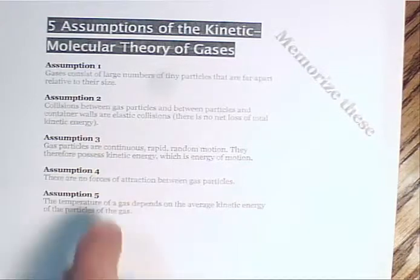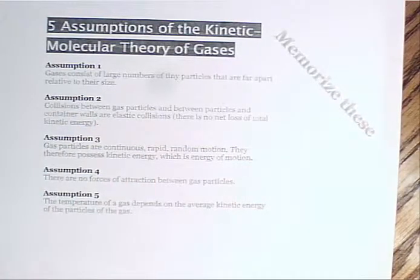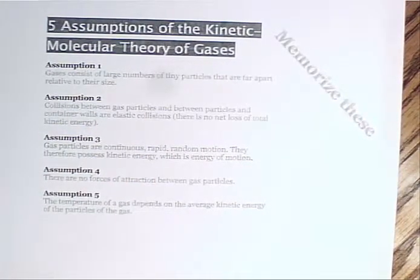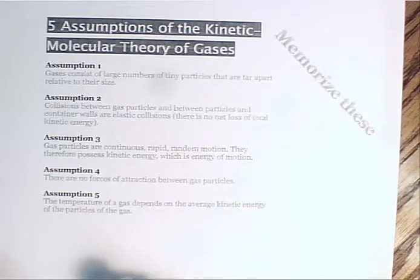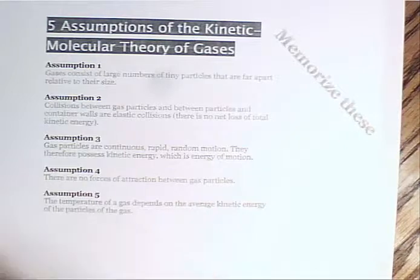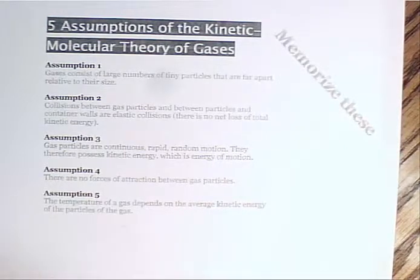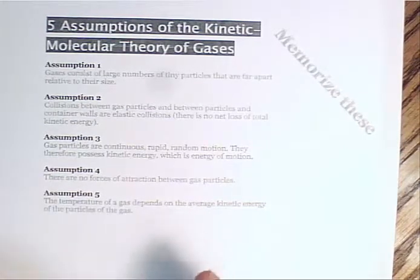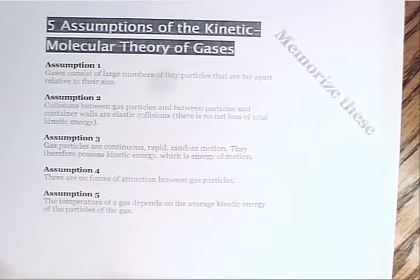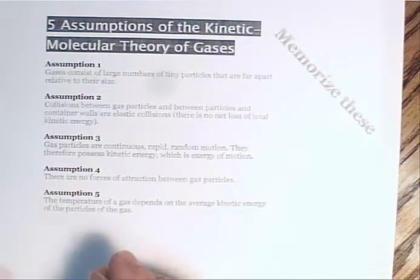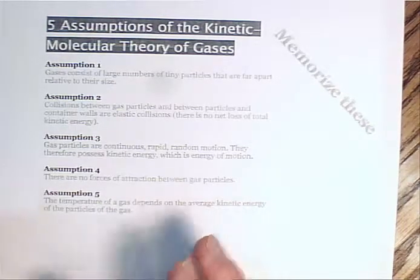So gases consist of large numbers of tiny particles far apart relative to their size. In fact, they're so far apart and the gas particles are so small, we assume their volume to be zero for the purpose of the ideal gas law or for the Charles' law and all these other gas laws. But we know that's not true. We know that for anything,